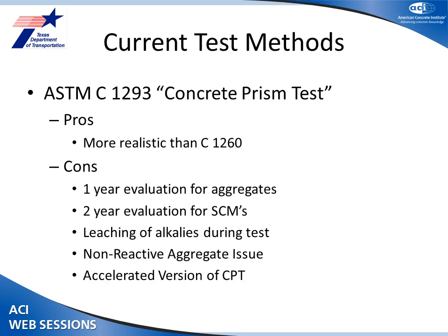Then we get into 1293, which is the concrete prism test — our reference condition or the most reliable test method. We get more realistic conditions compared to 1260. Alkali loading is about 1.25. But there are cons: it takes a year, and no one's going to wait around for a year-long test, especially if you're trying to get something through a project. Even worse, if you're looking at SCM mixes, that's two years. And then there's this leaching of alkalis during the test — that seems to be a big issue throughout the literature. And then some more recent issues are these non-reactive aggregate questions, and issues when you try to accelerate that version of the test.